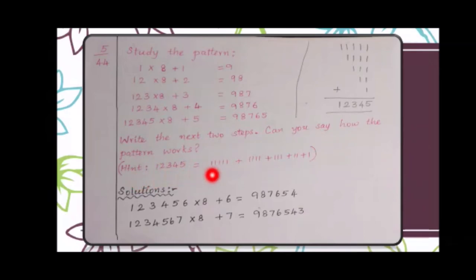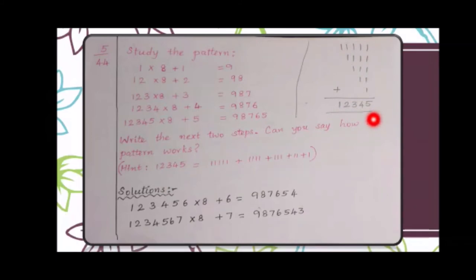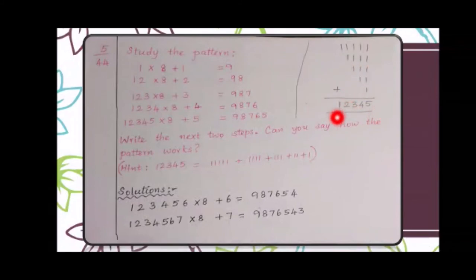As a hint, 12345 can be written as 11111 + 1111 + 111 + 11 + 1. Adding these together gives 12345. In each step, the first number gains one more digit, starting with 1 and adding the next consecutive digit. The answer digits start from 9 and decrease by 1 each position.